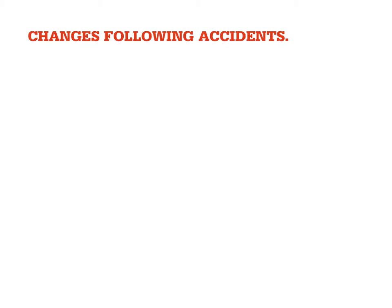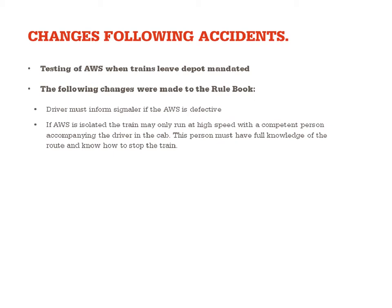There were a number of changes following these accidents. Testing of AWS when trains left the depot was mandated to make sure the AWS was working, and there were changes made to the rulebook. The driver must inform the signaller if the AWS is defective, and if the AWS is isolated a train may only run at line speed with a competent person accompanying the driver in the cab — someone with full knowledge of the route and how to stop the train, effectively a second driver. Following the accidents, cab secure radio (CSR) was also implemented across the network.